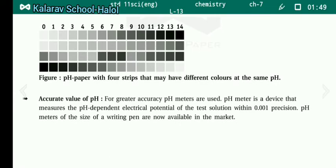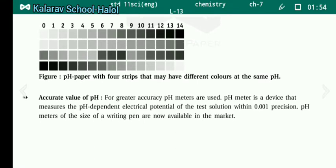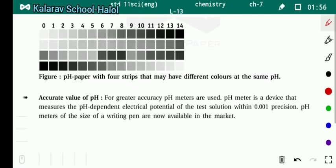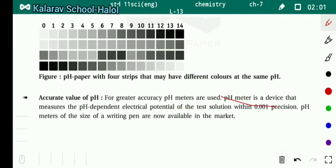For greater accuracy, pH meters are used. A pH meter is a device that measures the pH-dependent electrical potential of the test solution within a 0.001 precision. pH meters of the size of a writing pen are now available in the market.